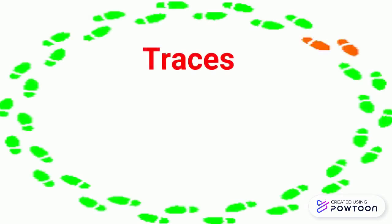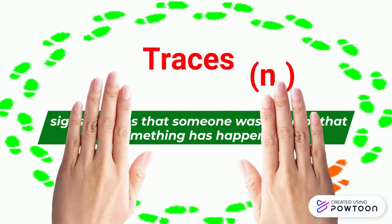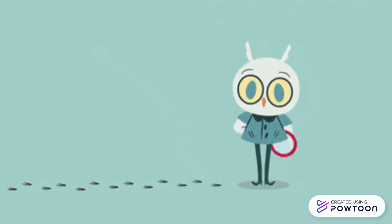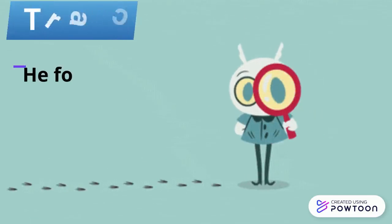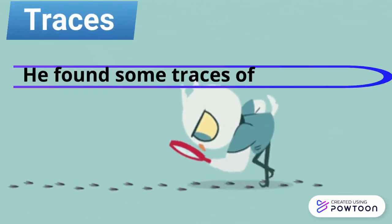The next word is 'traces'. It has a soft C and it's a noun, which means signs or clues that someone was there or that something has happened. For example: he found some traces of the thieves.